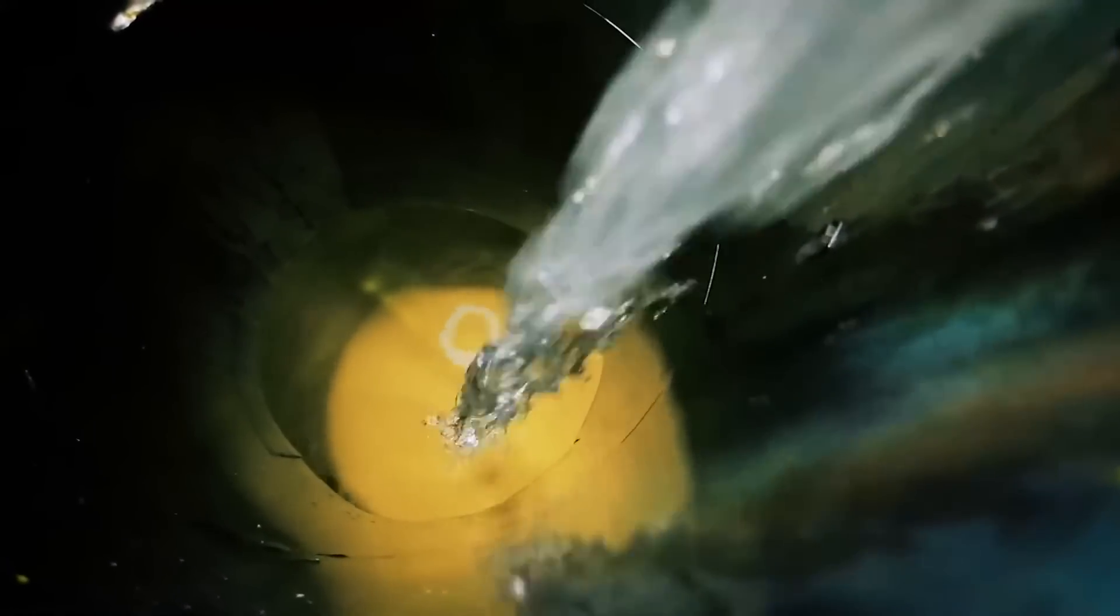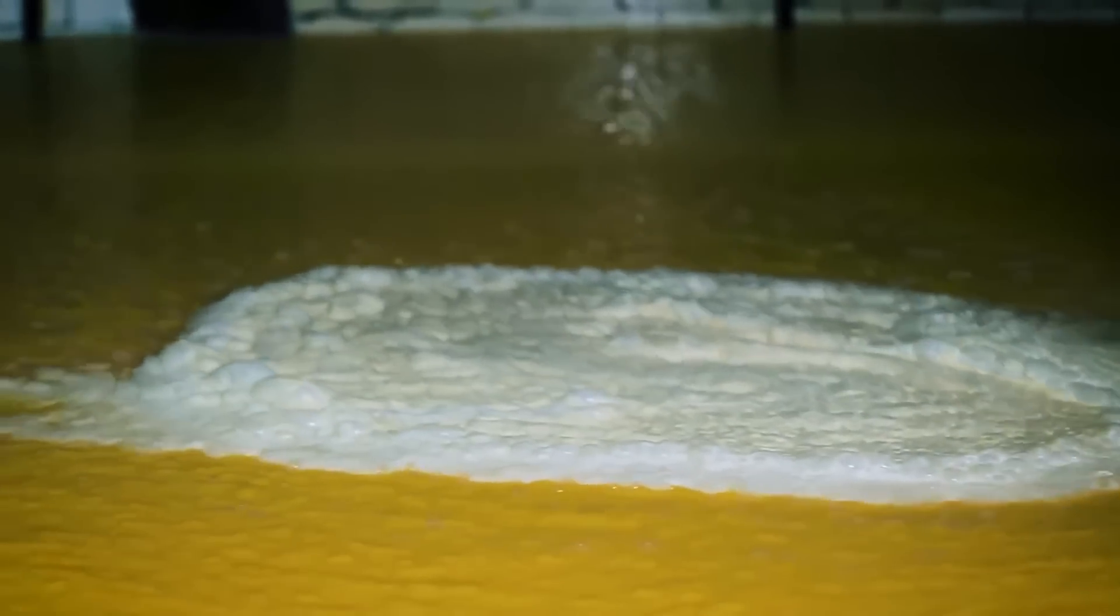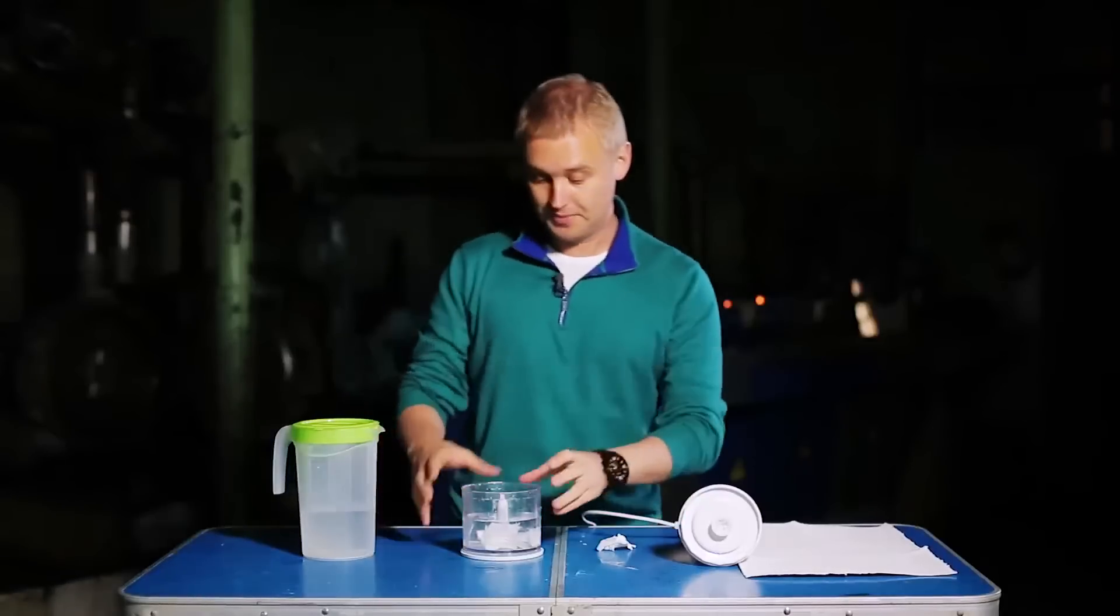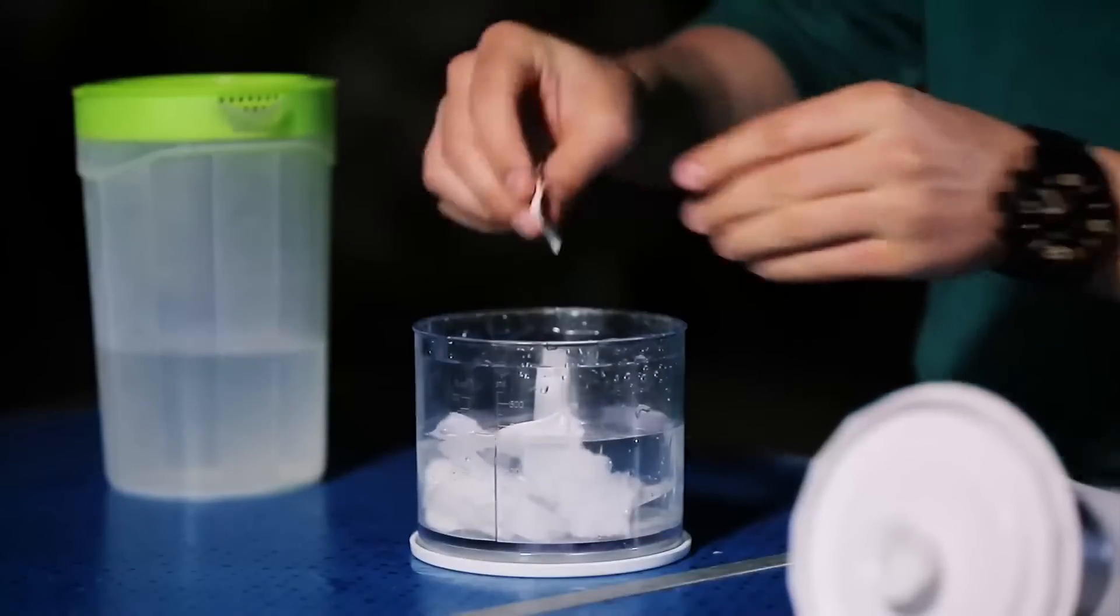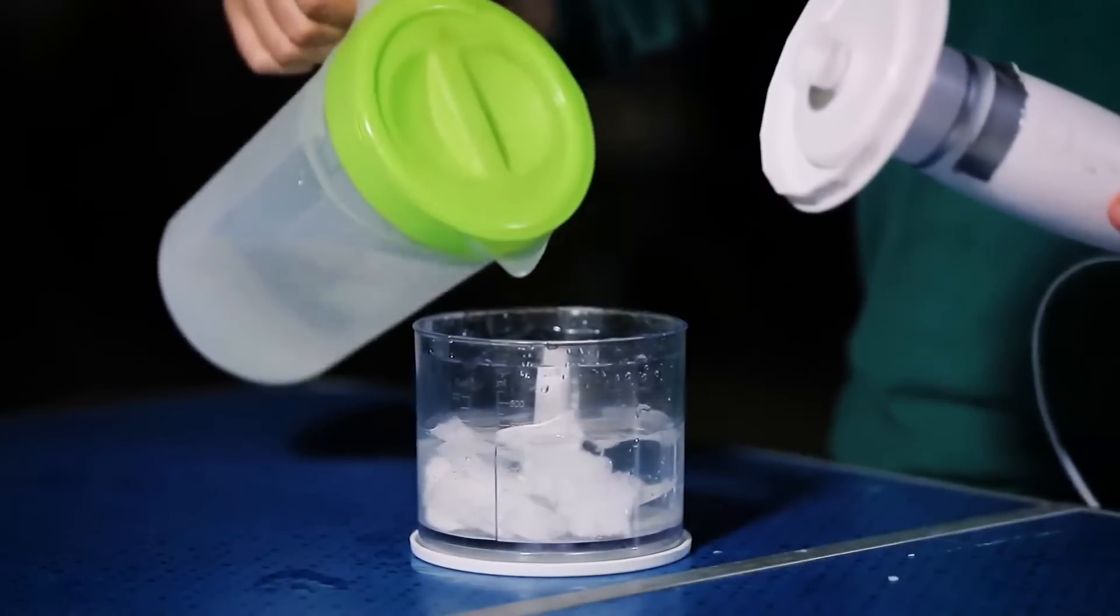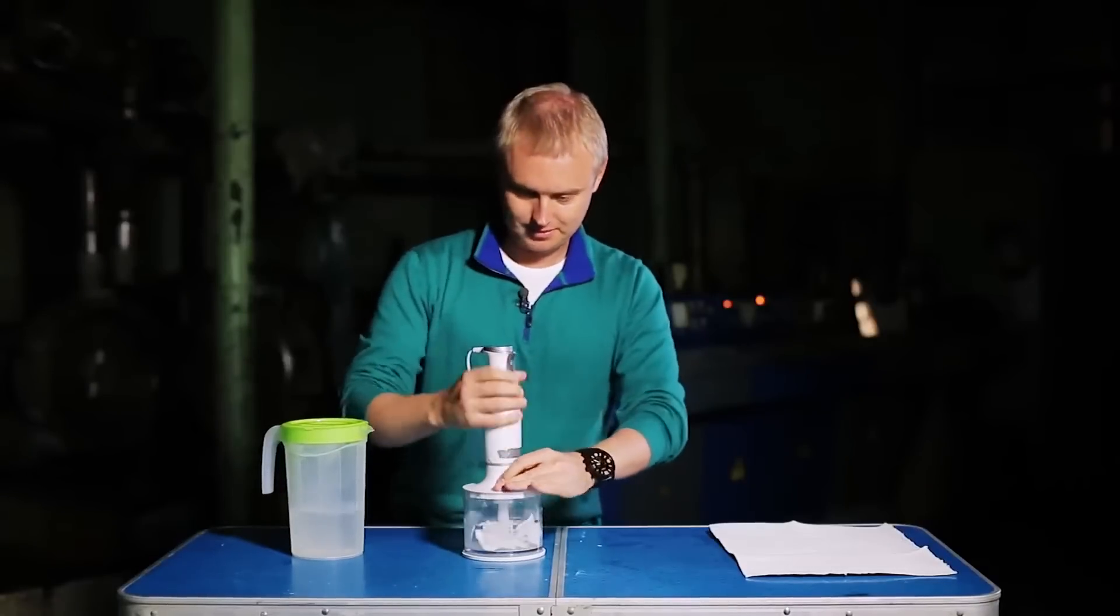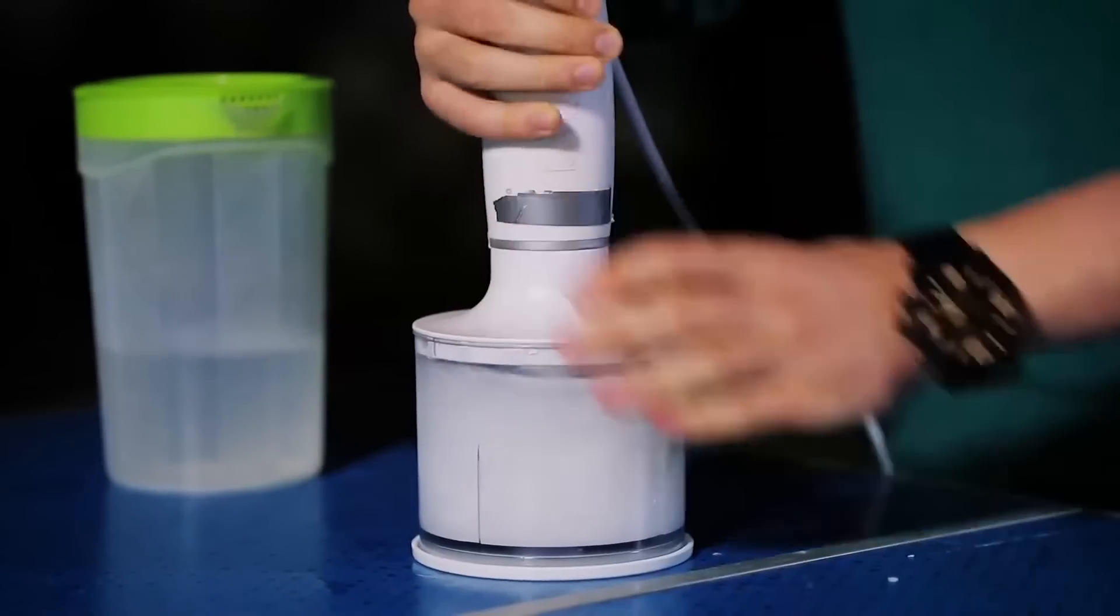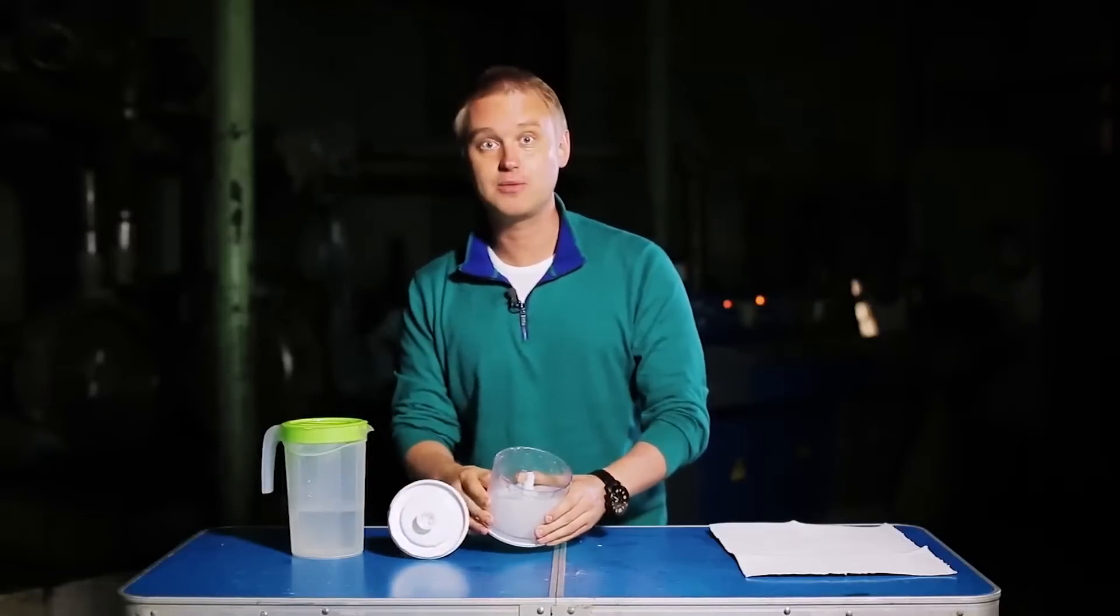As an example, we will try to make a sheet of paper using the same technology they use at the factory. This is how it looks in miniature form. This is a blender with pulp inside. Let's put in some more, now some water, and then just blend. The result is a uniform mass that is referred to as papery.